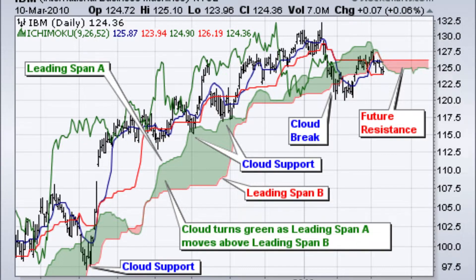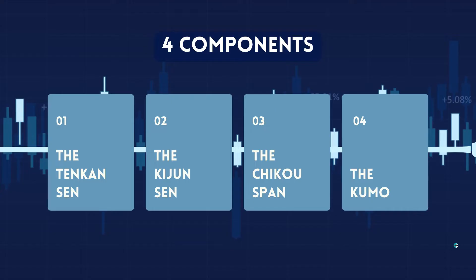Tenkan Sen and Kishu Sen as a group are then analyzed in relation to the cloud, which is composed of the area between Senku A and Senku B. Here we provide a brief breakdown of these four components. The Tenkan Sen is calculated by the sum of the highest high and the lowest low divided by two; the default setting is 9 periods. The Kishu Sen, or baseline, is based on the same formula as the Tenkan Sen, but the default here is 26 periods. The Chikou Span represents the current closing price, time-shifted backwards 26 periods. The Kumo consists of two lines, the Senku Span A and B.